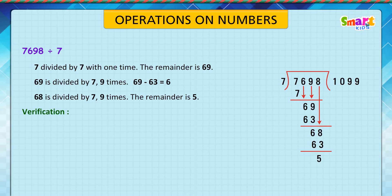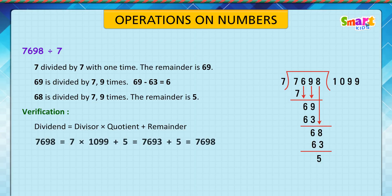Verification: dividend is equal to divisor into quotient plus remainder. 7,698 is equal to 7 into 1,099 plus 5, which equals 7,693 plus 5, which equals 7,698.